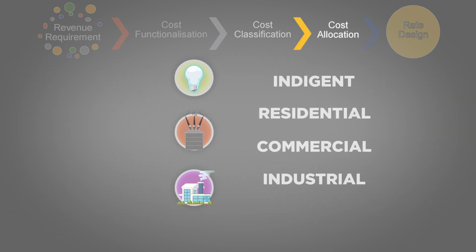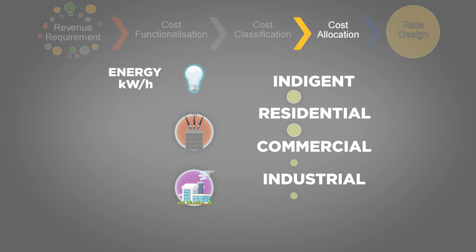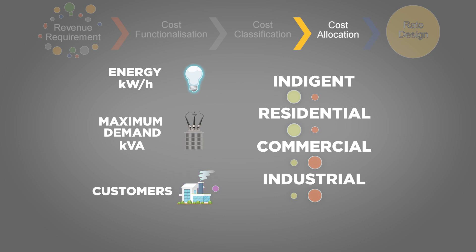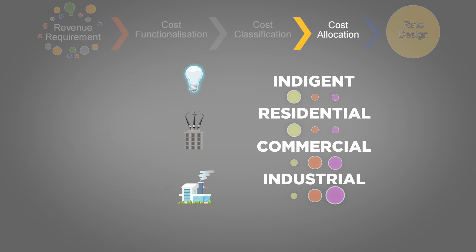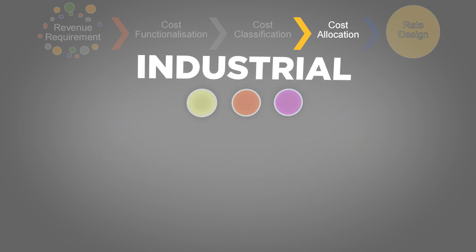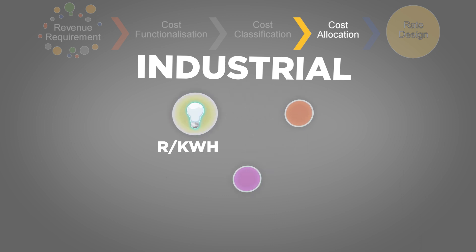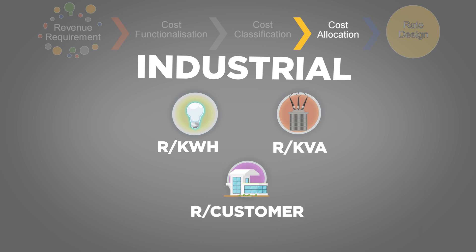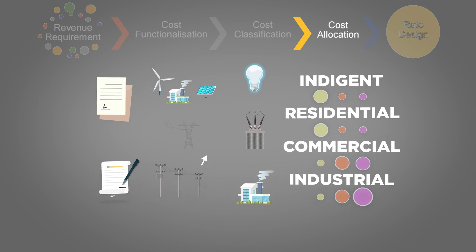In the fourth step, these cost groups are allocated to your different customers, reflecting the cost that they cause. The energy-related costs are allocated according to each group's share of total energy consumption. The demand-related costs are allocated using each group's contribution to the network's peak demand. The customer-related costs are allocated using a weighting based on how much more expensive large customers are to service relative to small customers. The cost allocation step provides you with the cost of supplying each customer group in Rand per kilowatt hour, Rand per KVA, and Rand per customer. That's the cost of supplying each customer group.